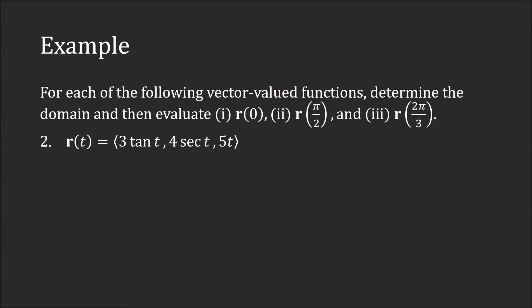Now we look at the function <3tan(t), 4sec(t), 5t>. The domain of the x component, tangent, is the set of all real numbers t such that t ≠ (2n+1)π/2, where n is an integer. Tangent is sine over cosine, and cosine is 0 at every odd integer multiple of π/2, so those values cannot be in the domain.